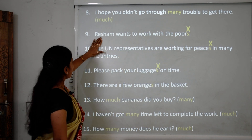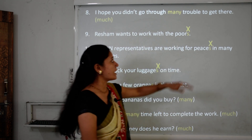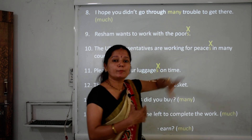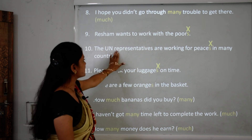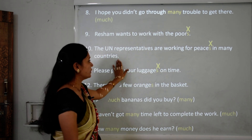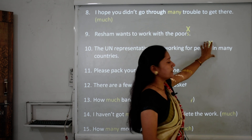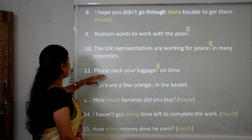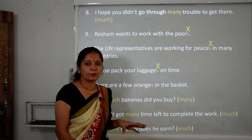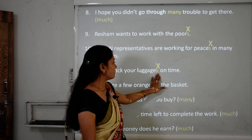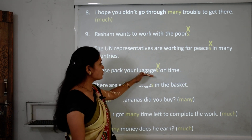Sentence 9: 'Rishan wants to work with the poors.' Poor is uncountable here, so we remove the S — 'the poor.' Sentence 10: 'The UN representatives are working for pieces in many countries.' Peace is uncountable, so remove the S — the correct word is 'peace.' Sentence 11: 'Please pick your luggages on time.' Luggage is uncountable, so no plural — the correct sentence is: 'Please pick your luggage on time.'